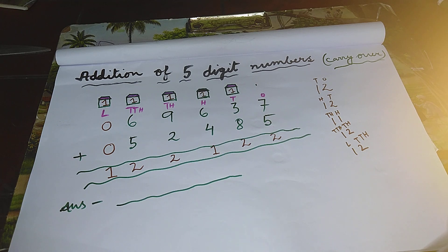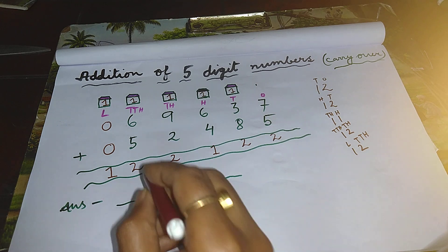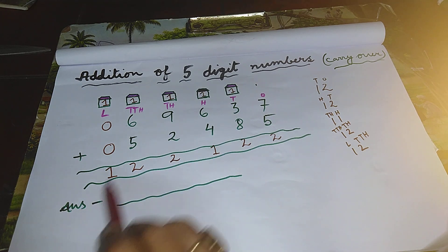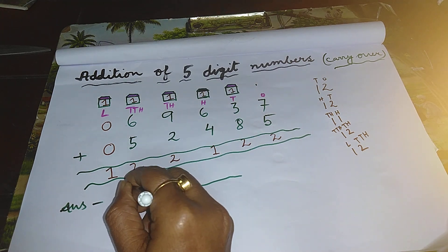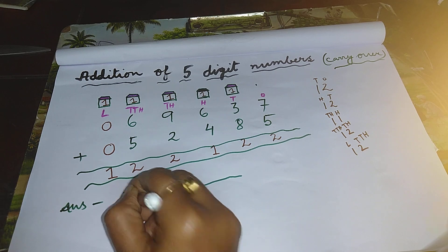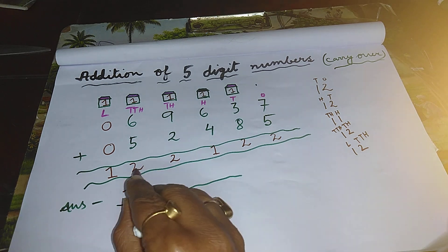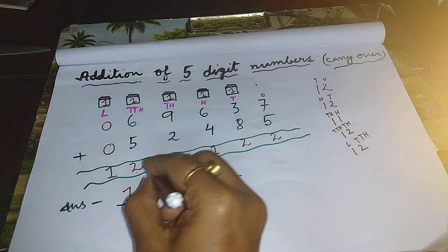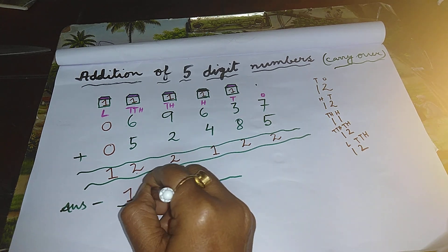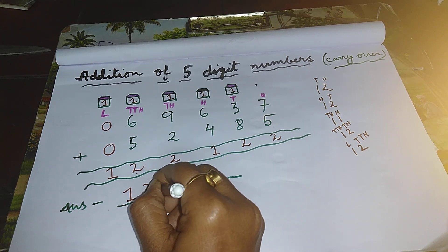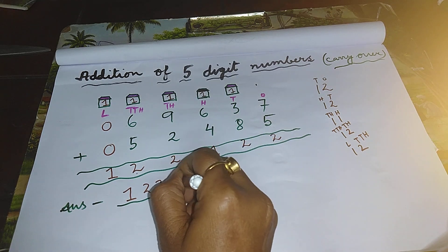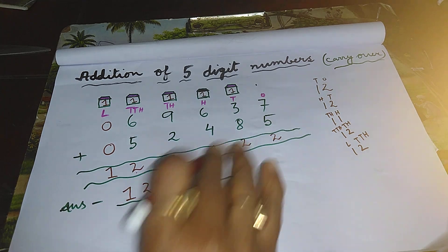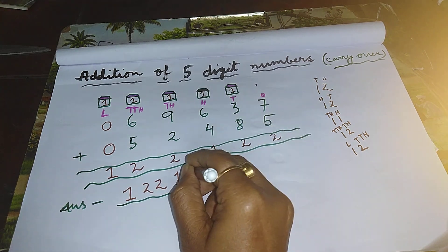So the answer is one lakh, twenty-two thousand, one hundred and twenty-two.